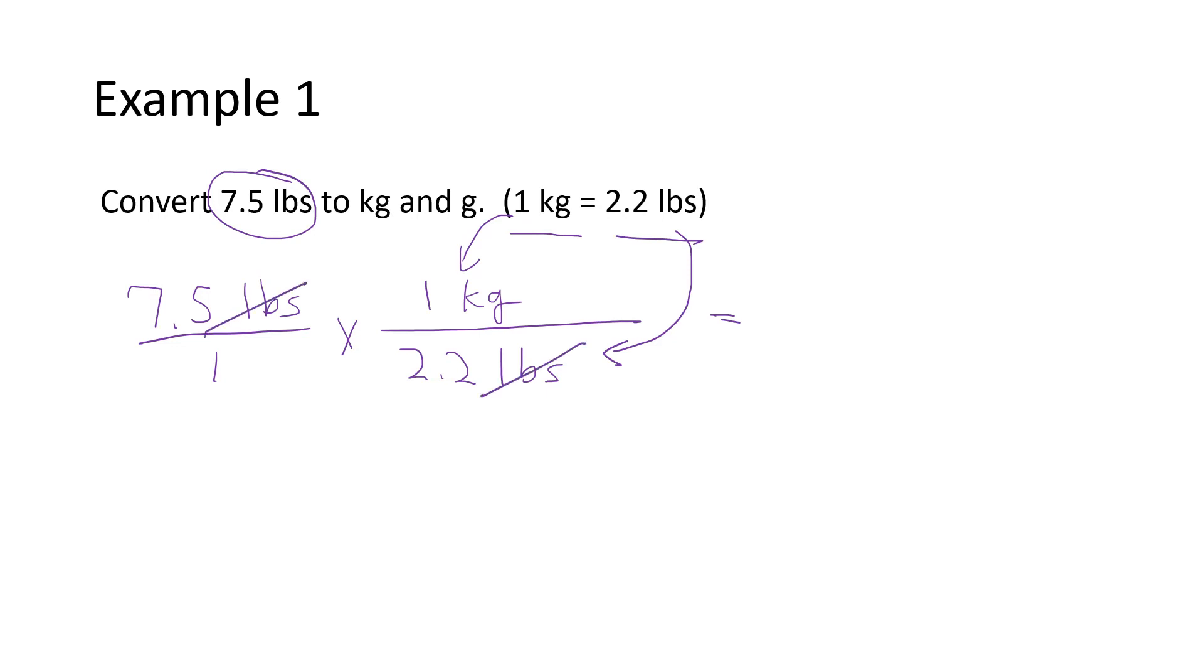Pounds cancel out with pounds. To run this in my calculator, I'm going to start with the 7.5, so 7.5. And then I'll hit divide by 2.2 equals. And that's giving me an answer of 3.4 kilograms.